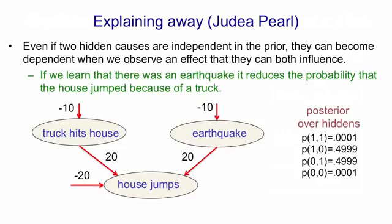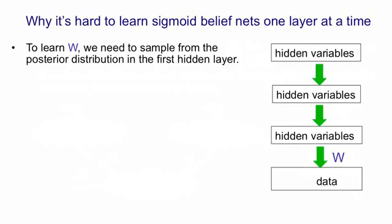Now that we've understood explaining away, let's go back to the issue of learning a deep sigmoid belief net. So we're going to have multiple layers of hidden variables. They're going to give rise to some data in our causal model. And we want to learn those weights W between the first layer of hidden variables and the data.